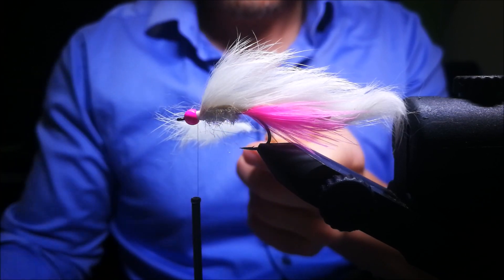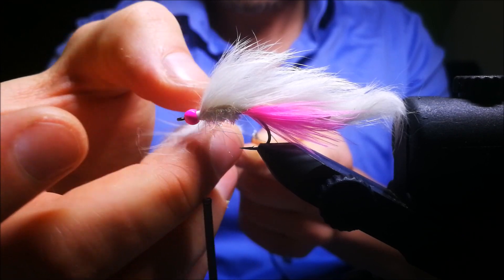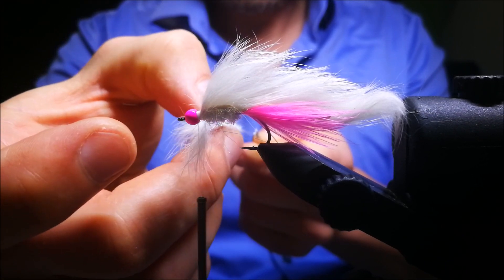Now place the fibers in the dubbing loop. Make sure you spread them out evenly over the dubbing loop before you start twisting the dubbing twister.